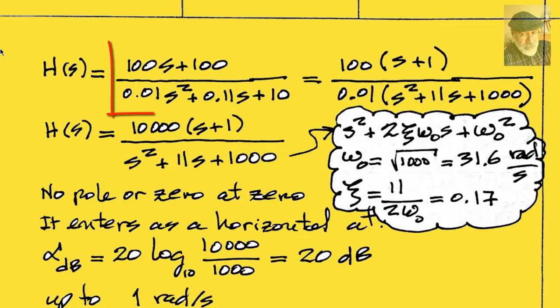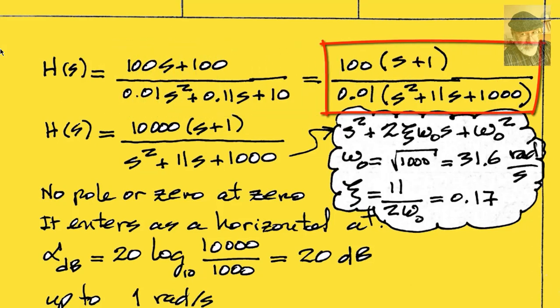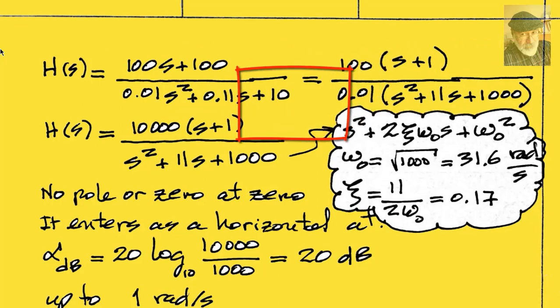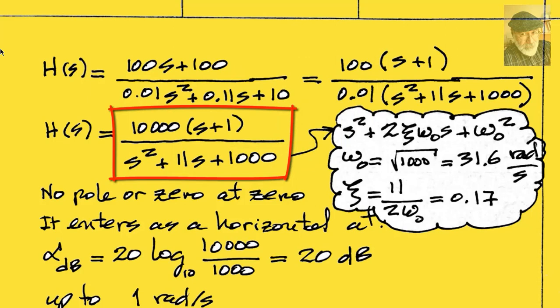The first thing we notice is that we can factor out 100 from the numerator and 0.01 from the denominator. We combine those factors and write a nicer expression down here.